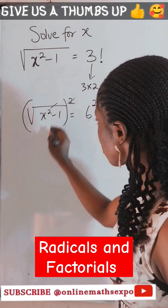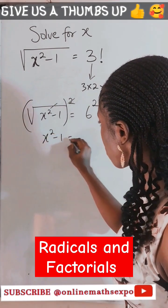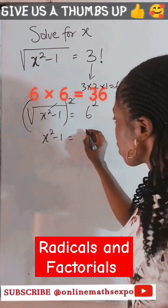So this is what you do. This will cancel, so we have x squared minus 1 is 6 to the power of 2, which is 36.